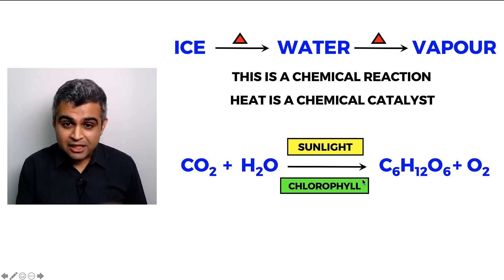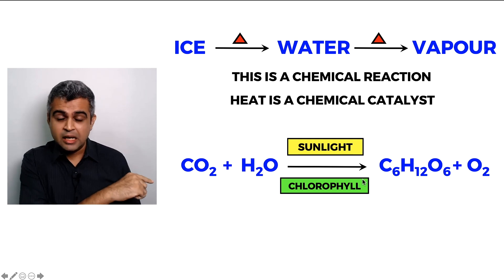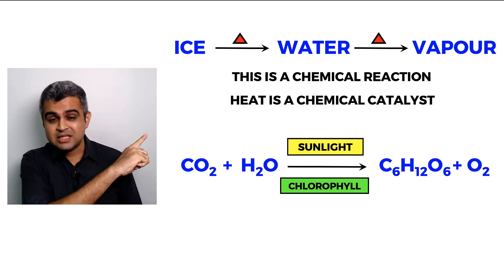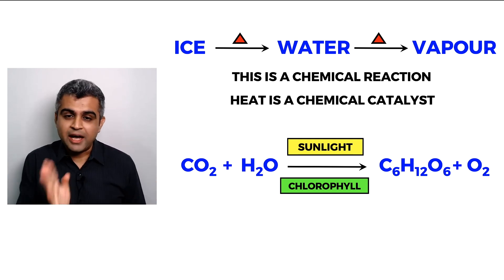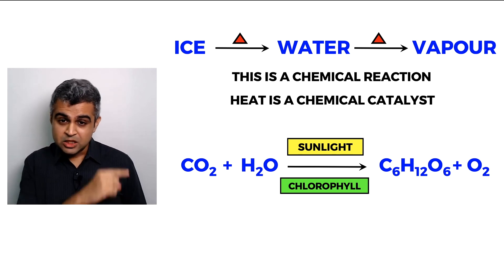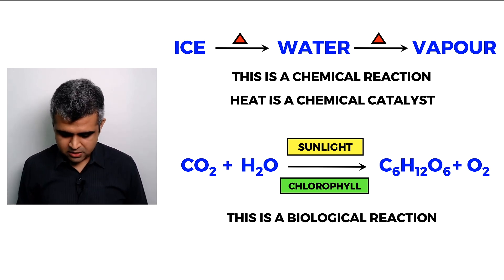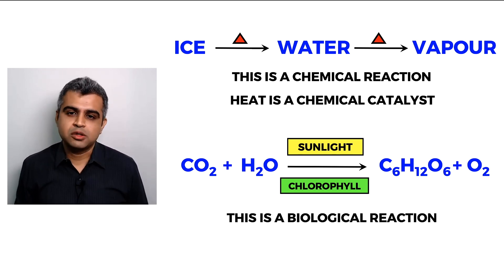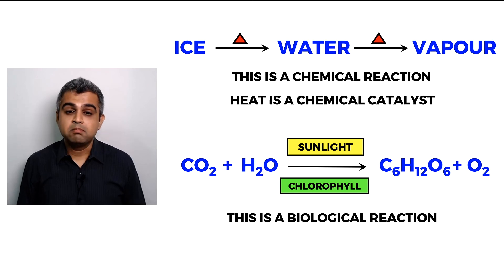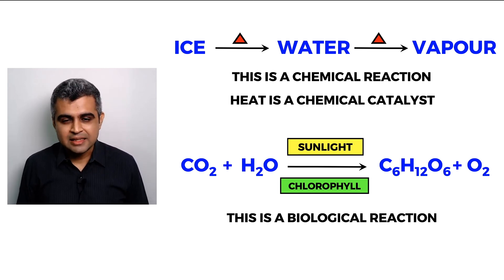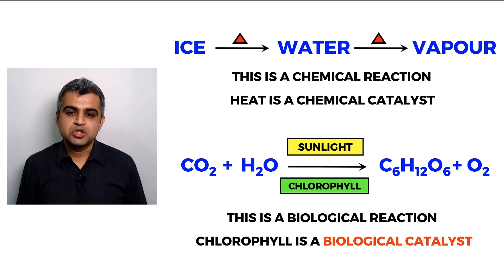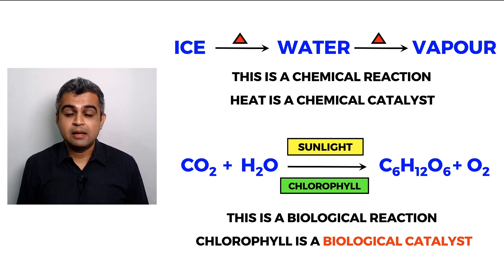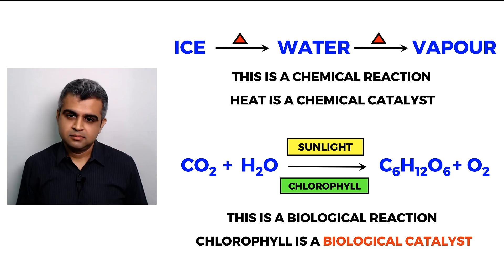Photosynthesis is a biological reaction, and hence chlorophyll acts as a biological catalyst. If you remove a chemical catalyst from a chemical reaction, the reaction will still happen — just more slowly. But if you remove the biological catalyst from the biological reaction, the reaction will not happen at all.